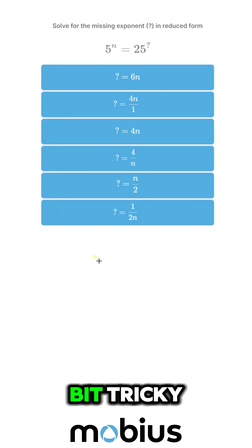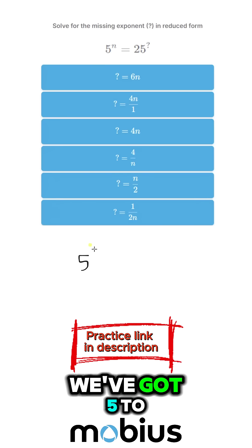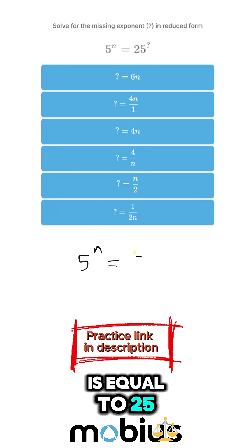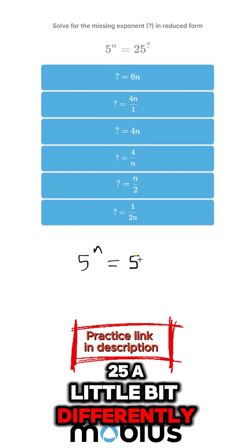It looks a little bit tricky, but if we rewrite this equation, we've got 5 to the power of n is equal to 25, and I'm going to write 25 a little bit differently.